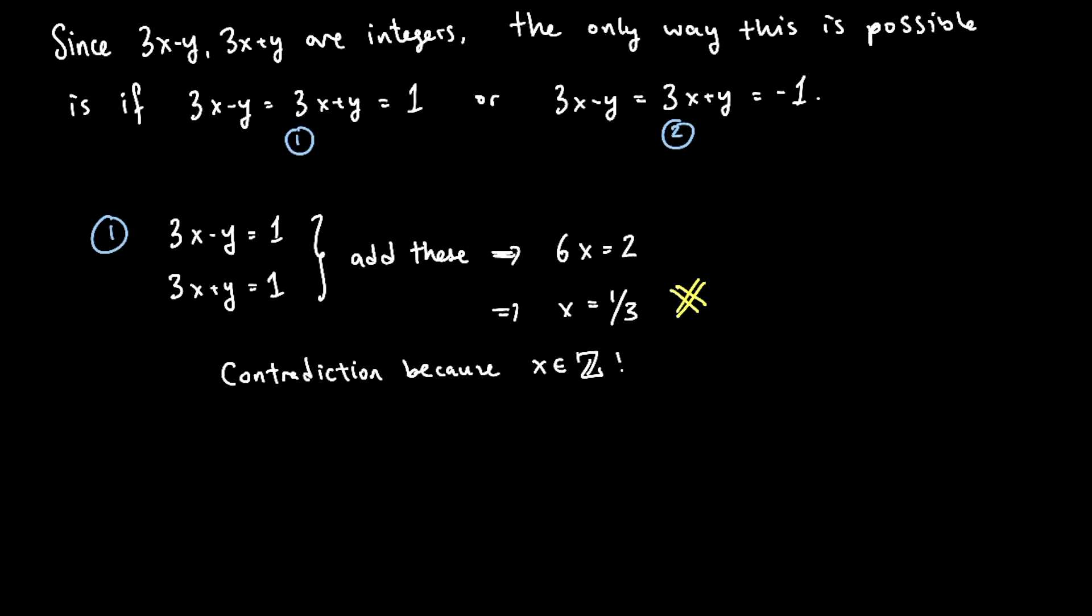In the second case, I mean it's basically the same, similar, let's say, except you're going to get x equals, well if you add these two equations and you have negative 1 on this side, it would be, you would get 3x equals negative 2 instead of 2 here. 6x equals negative 2. And you'd solve and you'd get x equals negative 1 over 3, which contradicts our assumption that x is an integer, again.